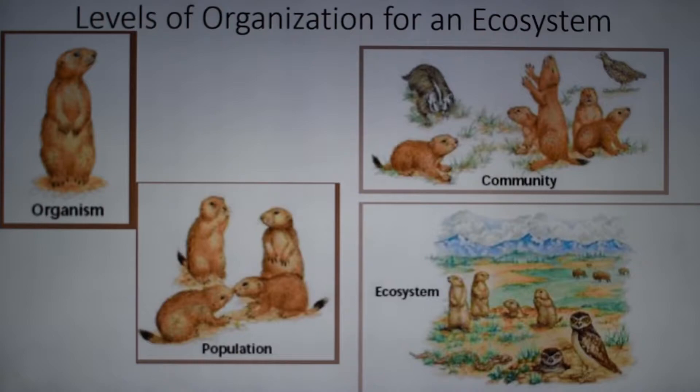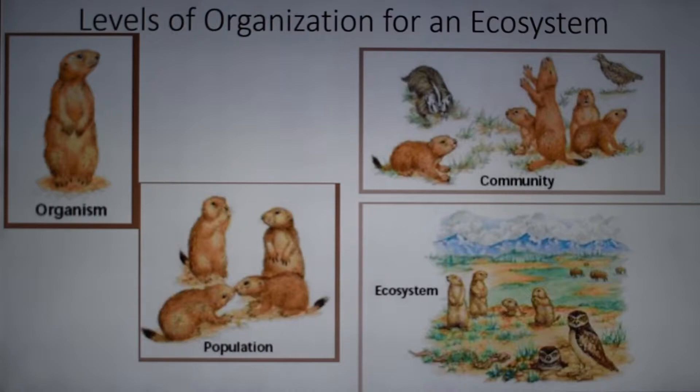Beyond that community, we have what we call the ecosystem — and that's what you've been studying. An ecosystem includes living or biotic and non-living or abiotic factors. For example, in your neighborhood you might have a house, a sidewalk, a pond, and you definitely have air. That's all part of your ecosystem. An ecosystem includes the living and non-living parts.